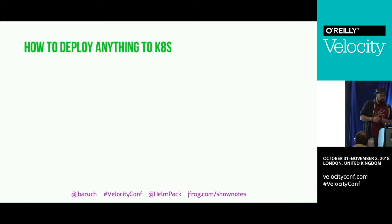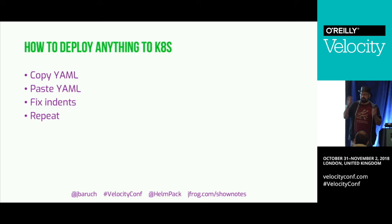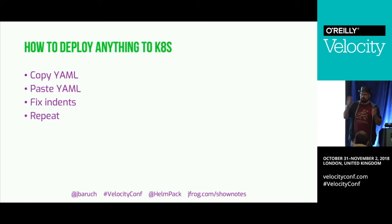We'll start with how do we deploy anything in Kubernetes without Helm. We basically copy YAML, then paste YAML, then fix indents — and then we repeat, a lot. This is our life with Kubernetes.